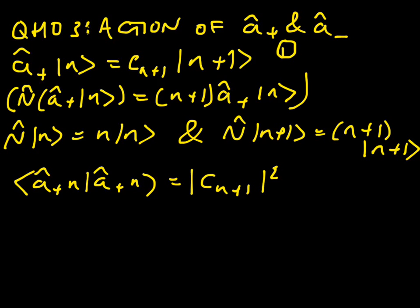We can bring the A plus out of the bra, and show that that's equal to ket N, and we'll have an A minus, an A plus, and then a ket N. Now we will do our standard trick, and we'll substitute A minus A plus with A plus A minus plus 1, which just comes from the commutator.